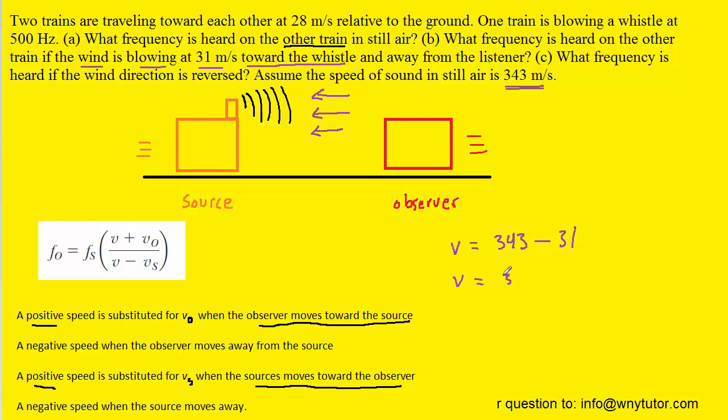And we can see that that comes out to 312 meters per second. But otherwise we're just going to go ahead and plug back into the equation using the same values except for the speed of sound which again has been slowed down by the wind blowing against the source of that sound.